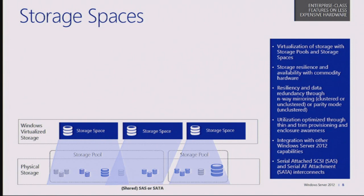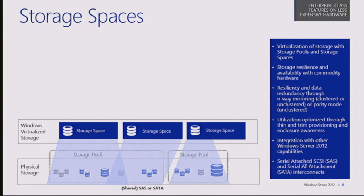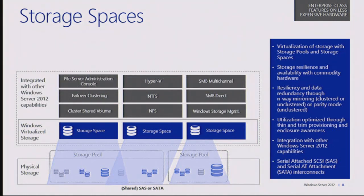We turn those pools into a storage space, and those storage spaces can span and take their disk from multiple storage pools. A group of disks can actually be a member of multiple storage pools, giving extra flexibility in the way you provision disk. You wouldn't be able to take a group of disks and split it between two RAID arrays in a traditional setup. On top of our storage spaces, we can run Hyper-V workloads, databases, SMB file storage, failover clustering — everything we'd expect to run on normal physical disk can run off a storage space.